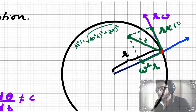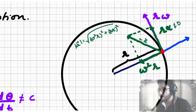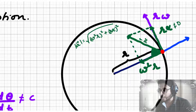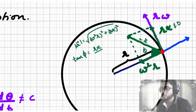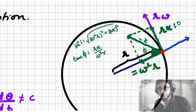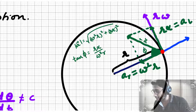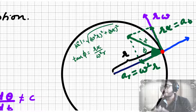The direction of the resultant acceleration may be determined by simply calculating the tan value of the angle it makes with the radius. Let's say φ is the angle it makes with the radius. Then tan φ will be equal to the ratio of the acceleration along the tangent to the acceleration along the radius.